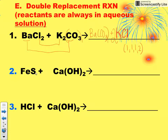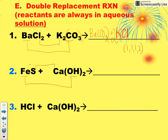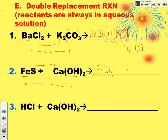Let's look at number two. Outer joins with outer: iron and hydroxide are going to come together, and calcium and sulfur are going to come together. You need to figure out what charge to assign to iron, and you do that by looking back at the reactant side and deciding what charge it had there.